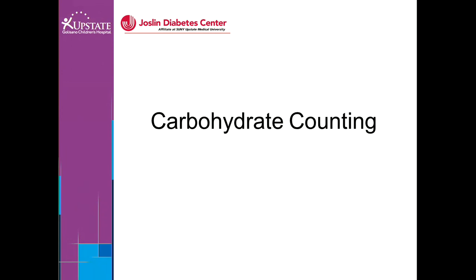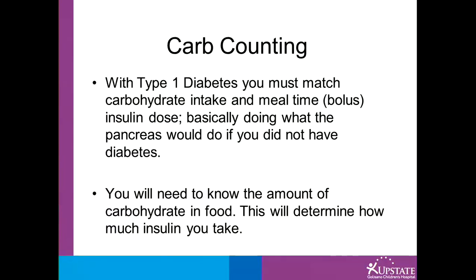Carbohydrate counting is a method to use to help manage blood sugar levels. With type 1 diabetes, you must match carbohydrate intake and mealtime insulin dose, basically doing what the pancreas would do if you did not have diabetes. Remember that bolus insulin helps control high blood sugars caused by a meal or a snack. You will need to know the amount of carbohydrate in food — this will determine how much insulin you take.